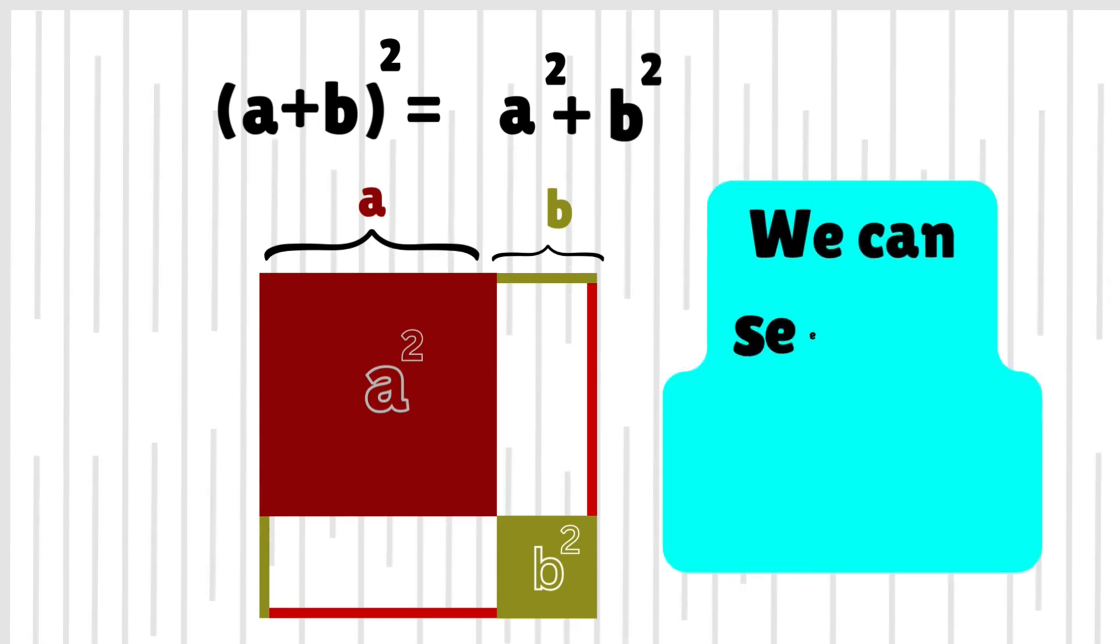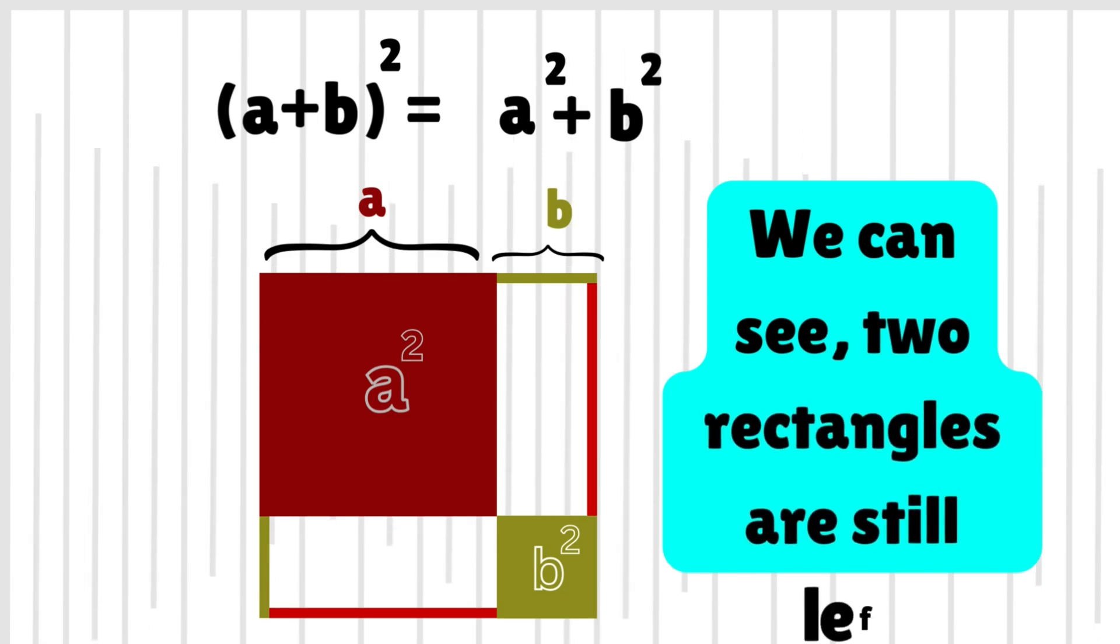It is clearly visible a square and b square are not able to cover whole area of the big box.